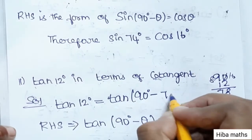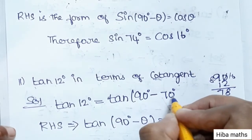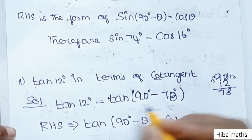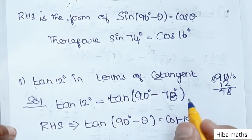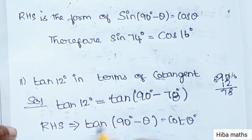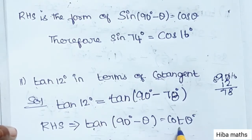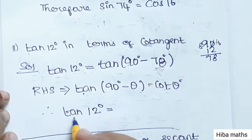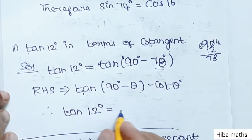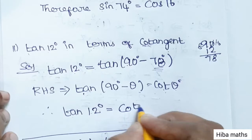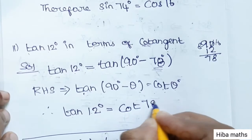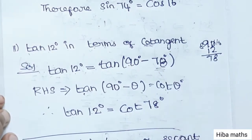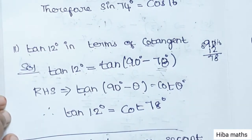So sin 70 degree is equal to cosine. Then tan 90 minus theta is equal to cot theta. So 78 is equal to theta, and tan 12 degree is equal to cot 78 degree.